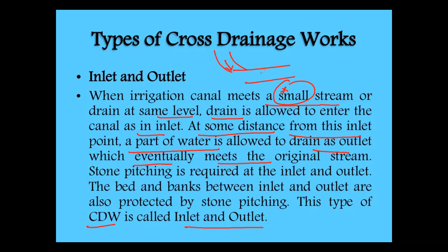In an inlet and outlet arrangement, the drainage is connected to the canal at one point. After the drainage water flows into the canal for some distance, this drainage water is allowed to exit and meet another stream or river. Stone pitching is required at the inlet and outlet portions, and the beds and banks between the inlet and outlet are also protected by stone pitching. This type of cross-drainage work is called inlet and outlet and comes under Type 3.